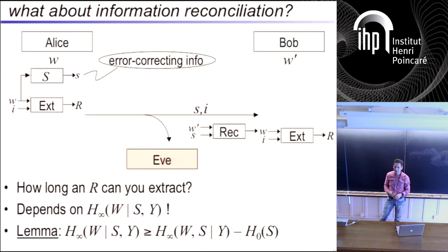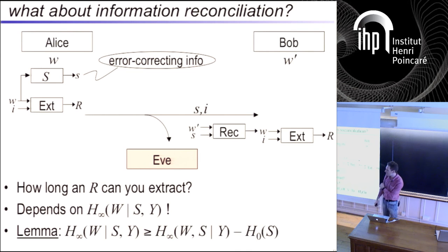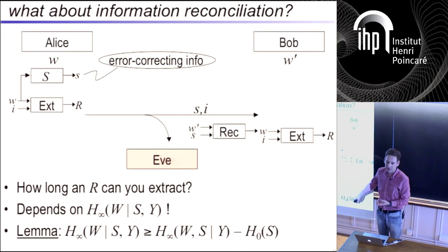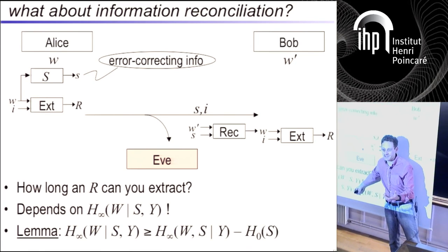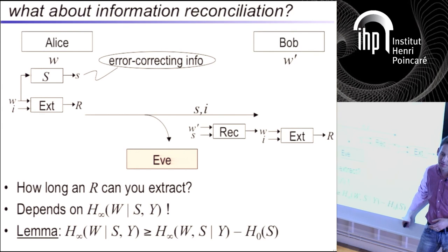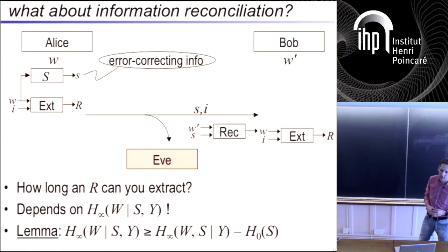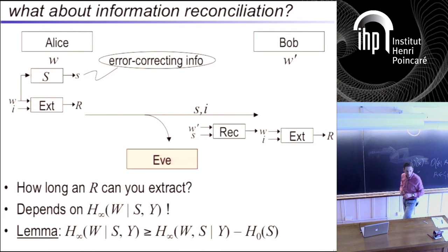The extracted key length decreases by exactly the number of bits you exchange — the proof is very simple once you have the chain rule. You extract as much entropy as there is, and you bound it by subtracting whatever you sent. If you sent 100 bits of error-correcting information, subtract that off and extract 100 bits less — and that's still okay.